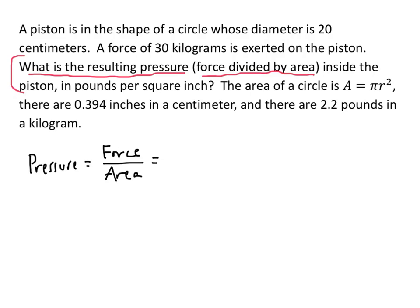So if we can figure out the force and the area, we can find the answer. The force they tell us is 30 kilograms, so we put 30 kg in for force. The abbreviation for kilogram is kg. For area, they tell us it's pi r squared, so we'll have to do a bit of work before we can write that number in.